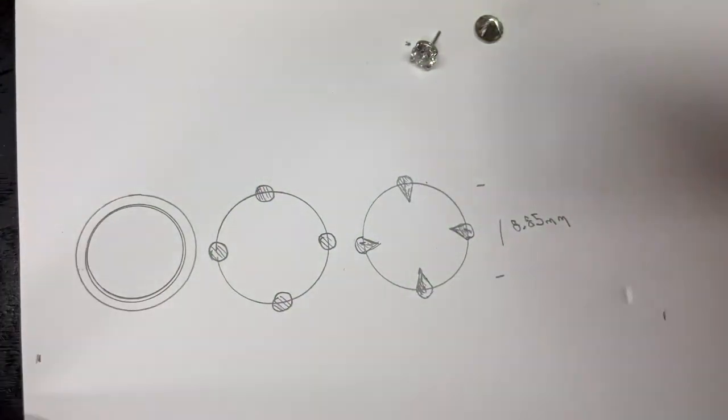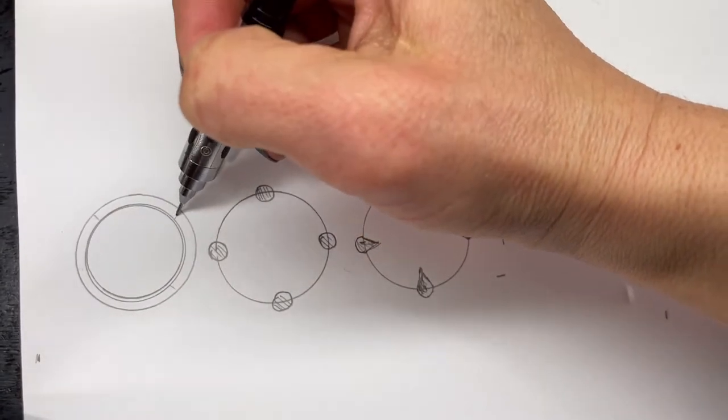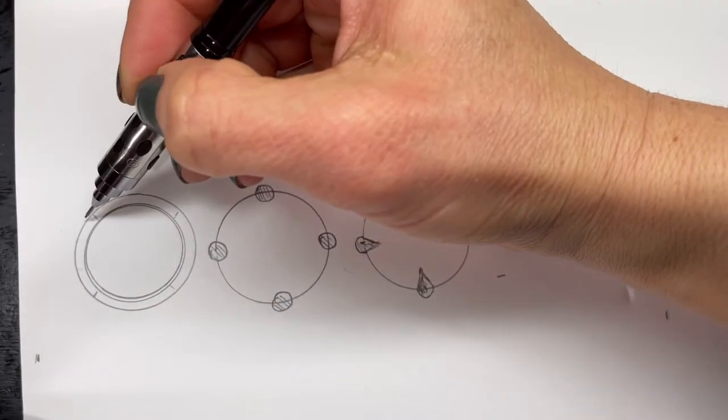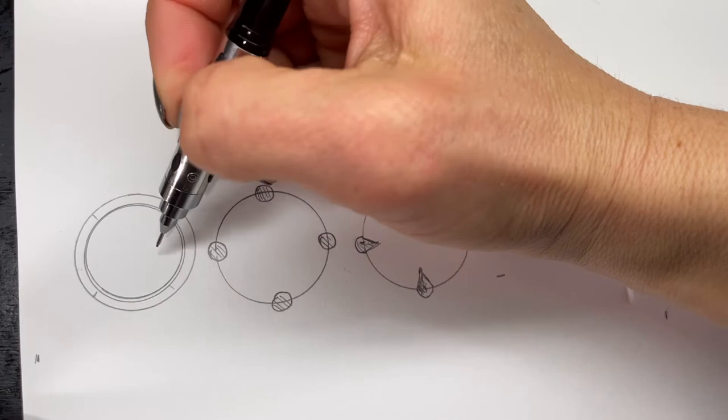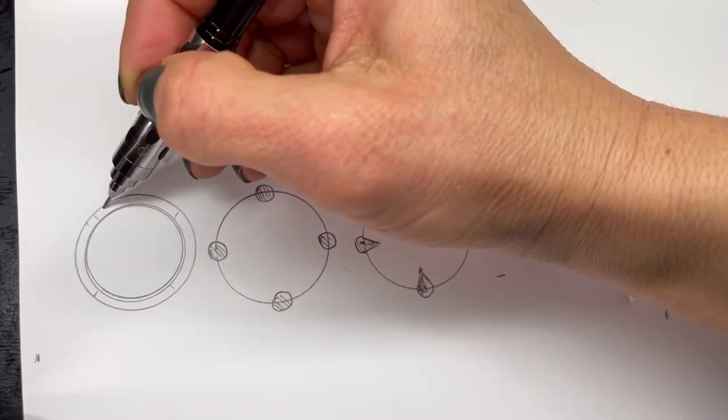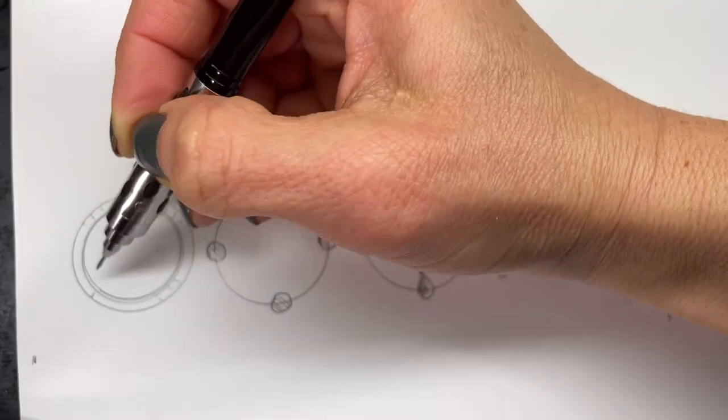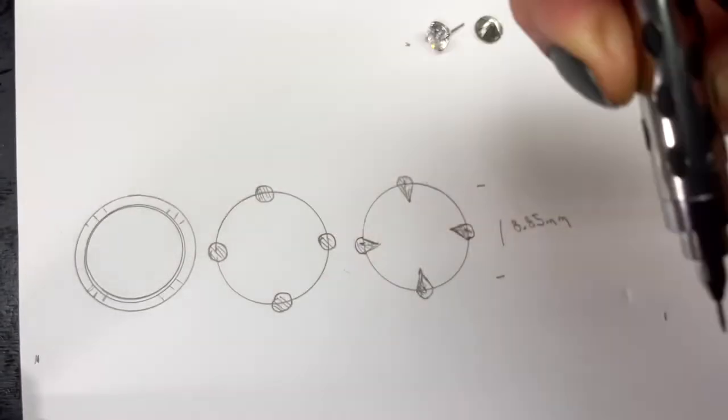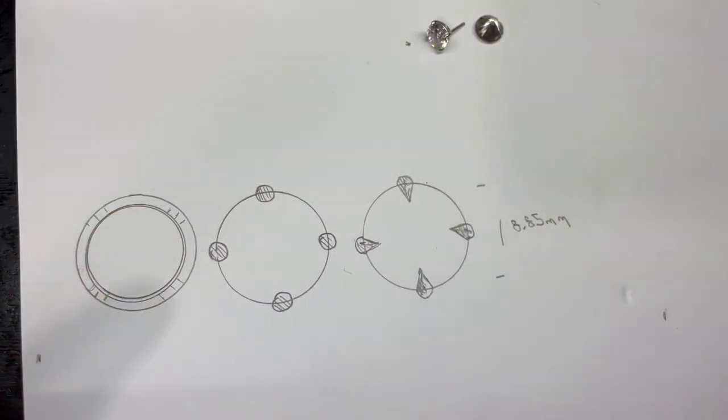So we're going to use this entire part of the real estate underneath the stone as the seat. The prongs are going to come and be connected to the seat. So this is a little bit of a different orientation, but I'm going to estimate here that that is the prongs that will curl over.